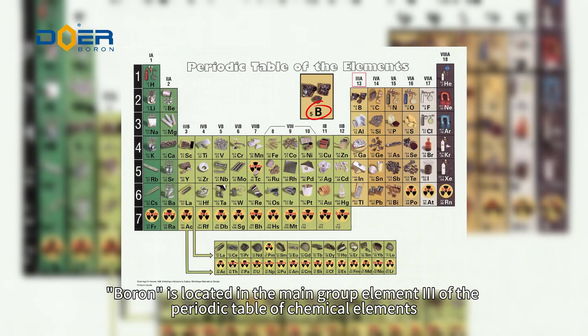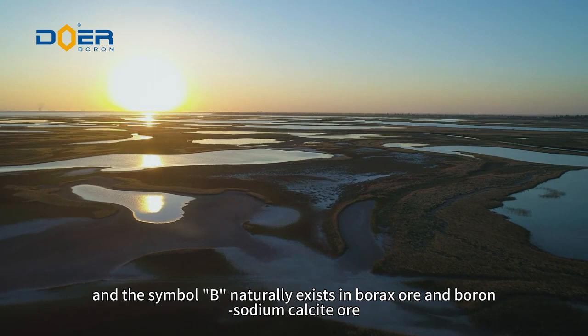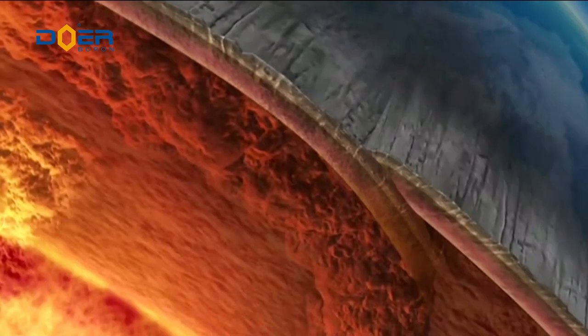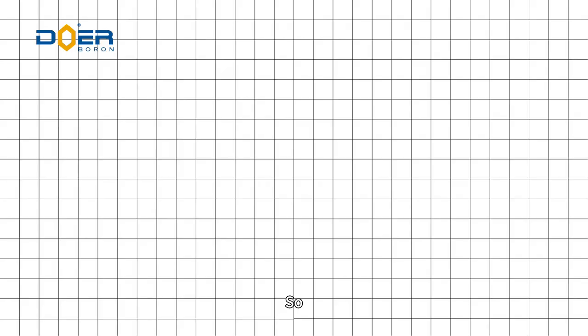Boron is located in main group element 3 of the periodic table of chemical elements with the symbol B. It naturally exists in borax, in boron sodium calcite, or is formed by migrating above sea level. So do you know how the element boron was discovered?